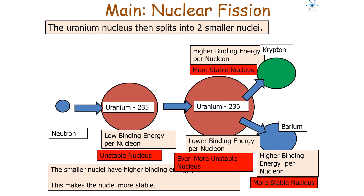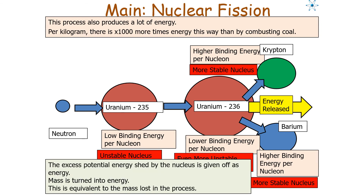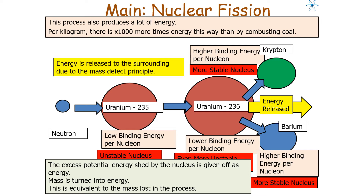This process increases the stability of the nuclei and also produces lots of energy — about a thousand times more energy per kilogram than by combusting coal. Energy is released because mass is turned into energy equivalent to the mass lost in the process, and energy is released to the surroundings due to the mass deficit principle.